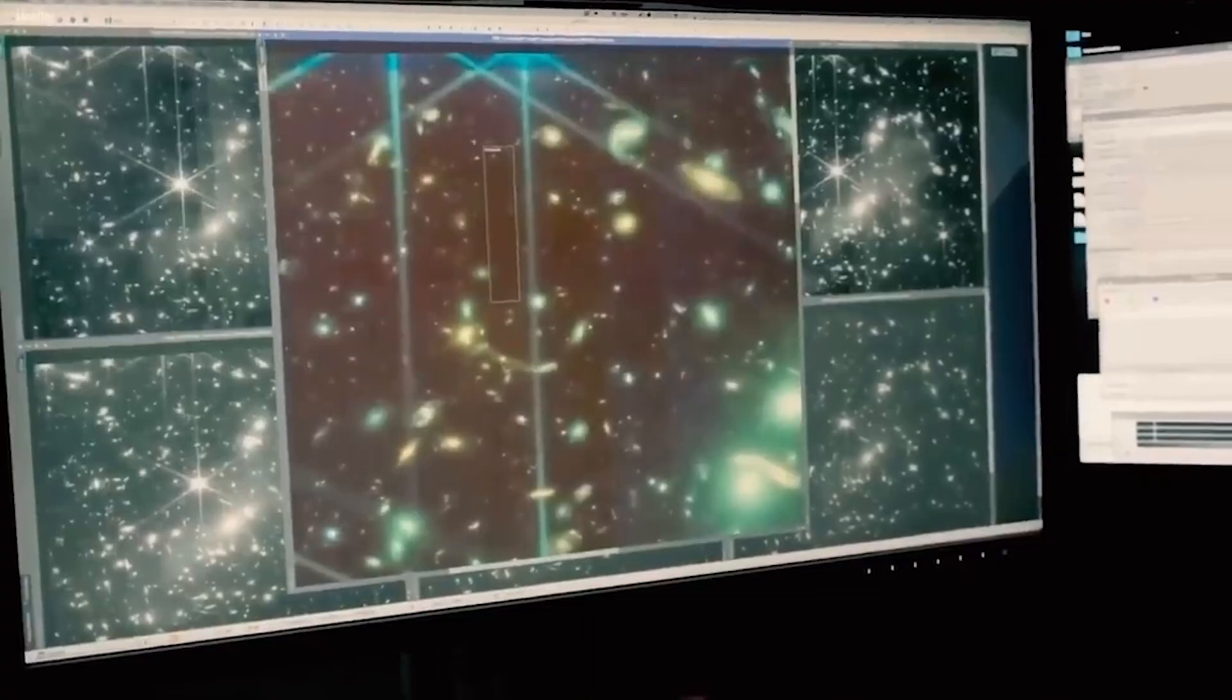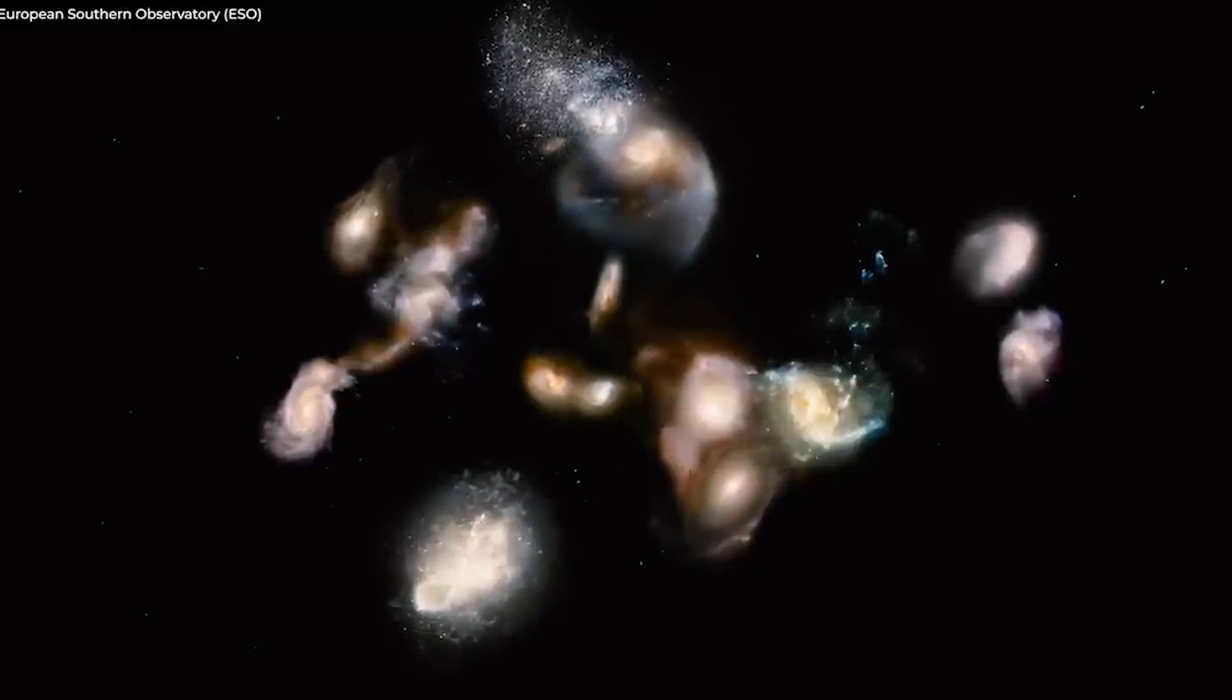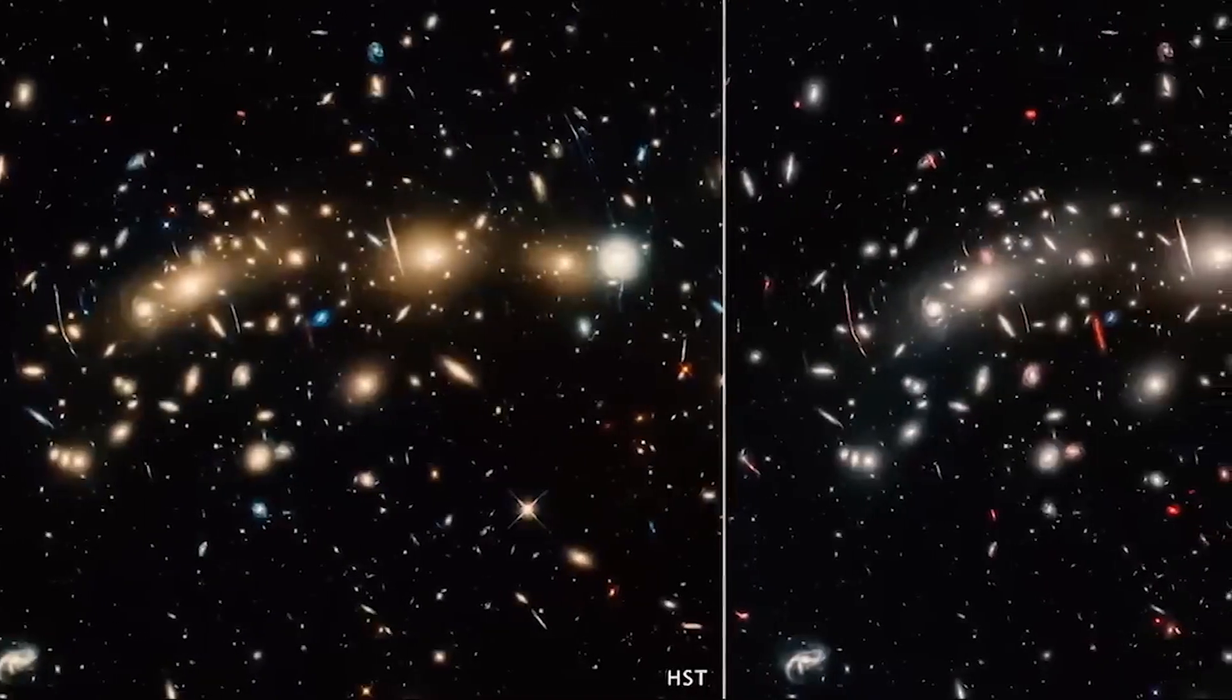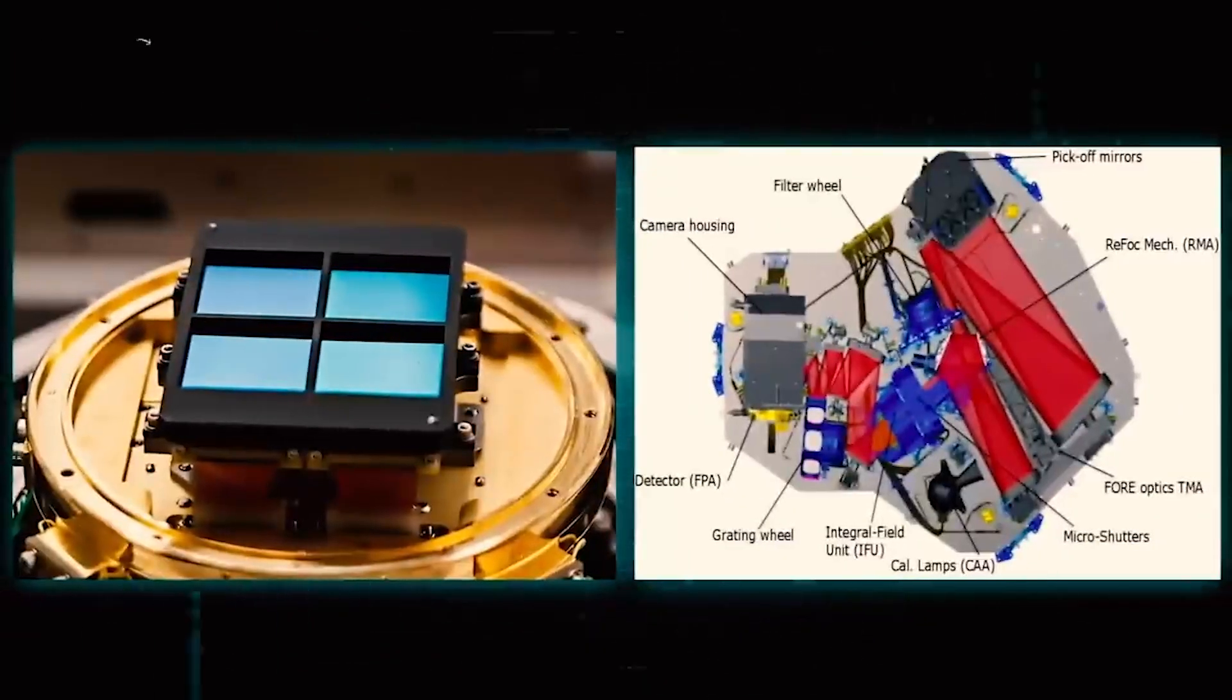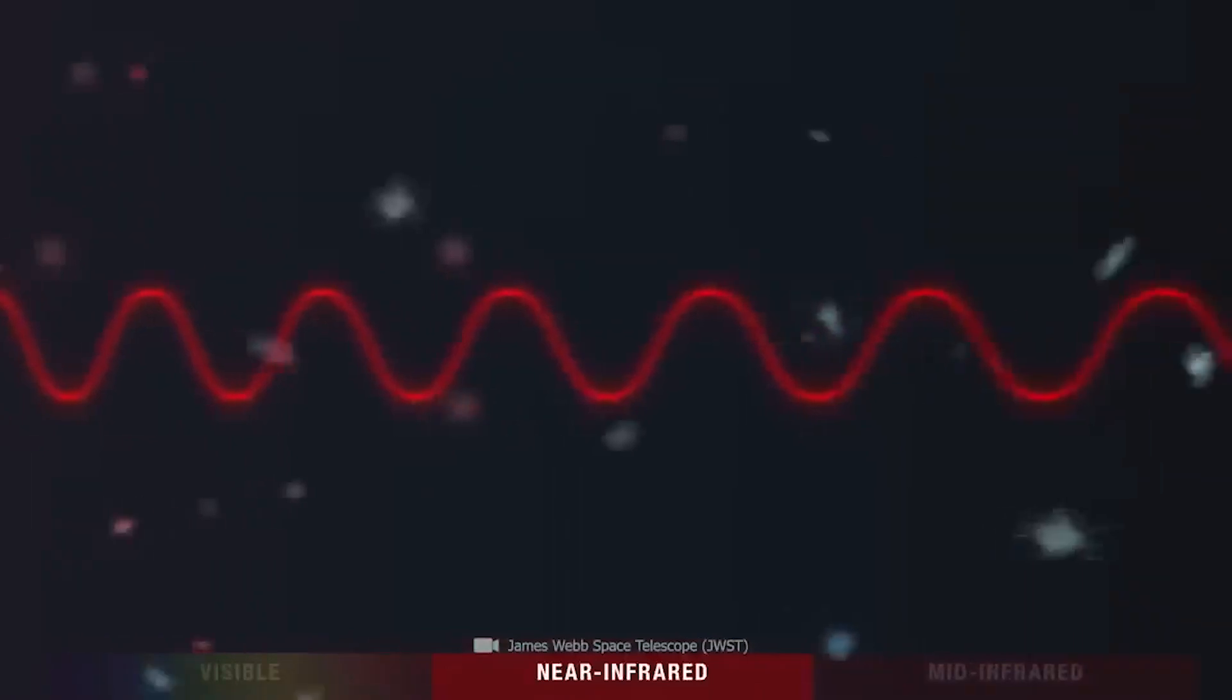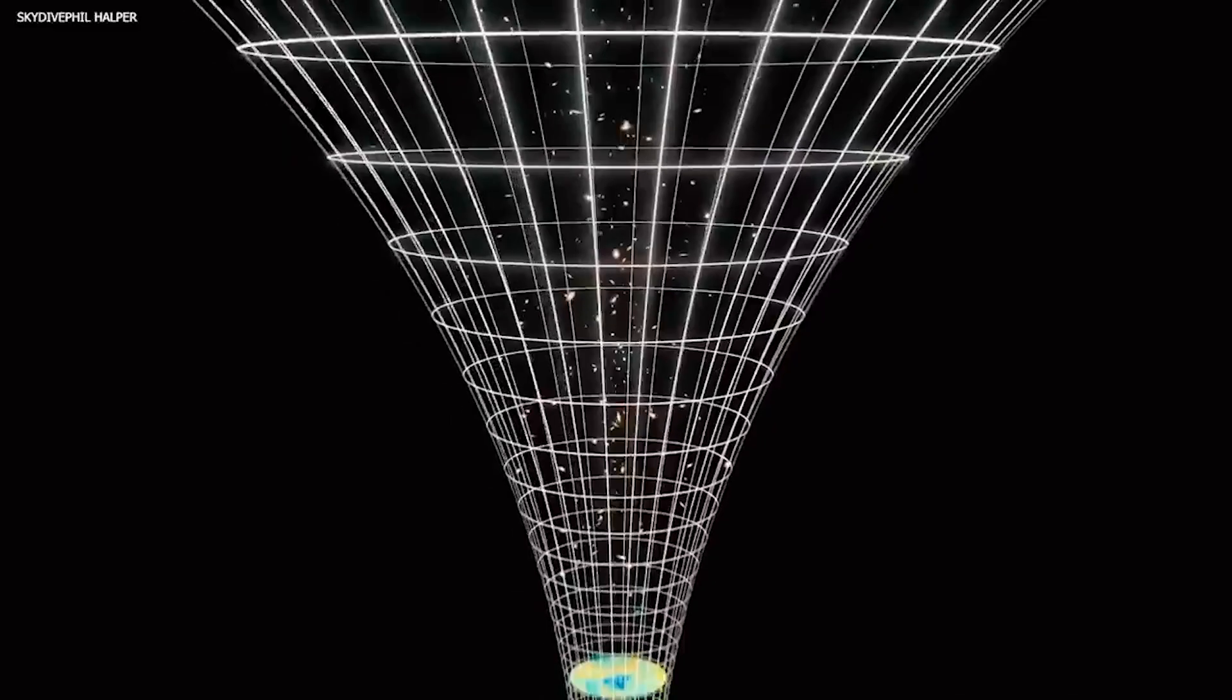Meanwhile, in 2023, Webb detected 15 strange galaxies that appeared to be older than the Big Bang itself. These galaxies were located in a region of the sky called the Hubble Ultra Deep Field, which is one of the most distant and faintest parts of the observable universe. Webb used its near-infrared camera and near-infrared spectrograph to measure the red shift of these galaxies, which is a measure of how much their light has been stretched by the expansion of the universe. The higher the red shift, the farther and older the galaxy is.